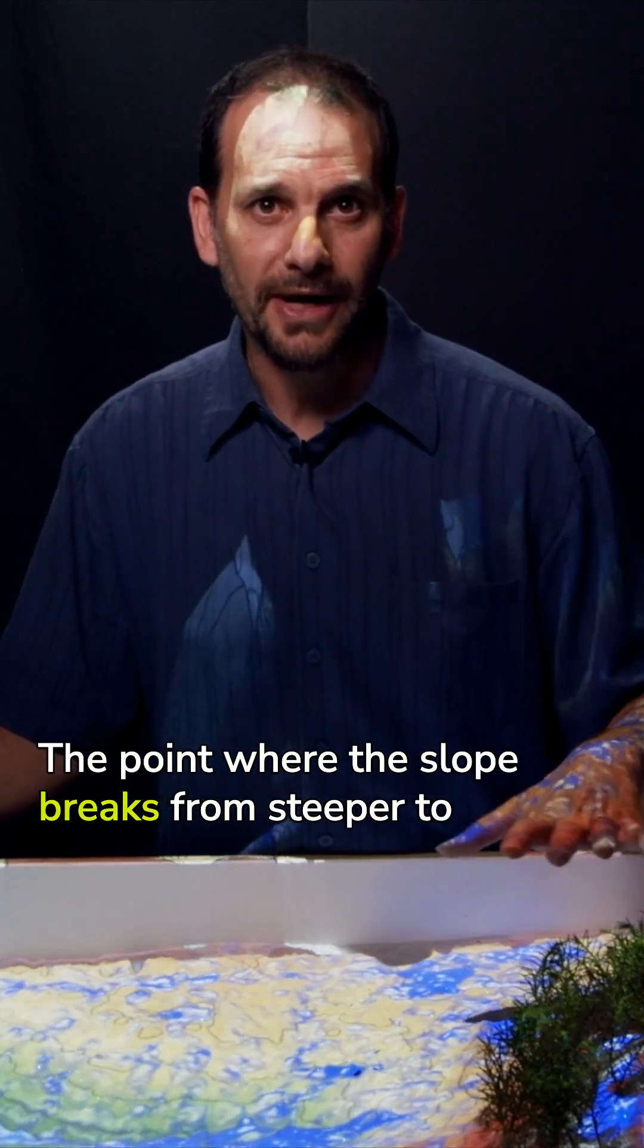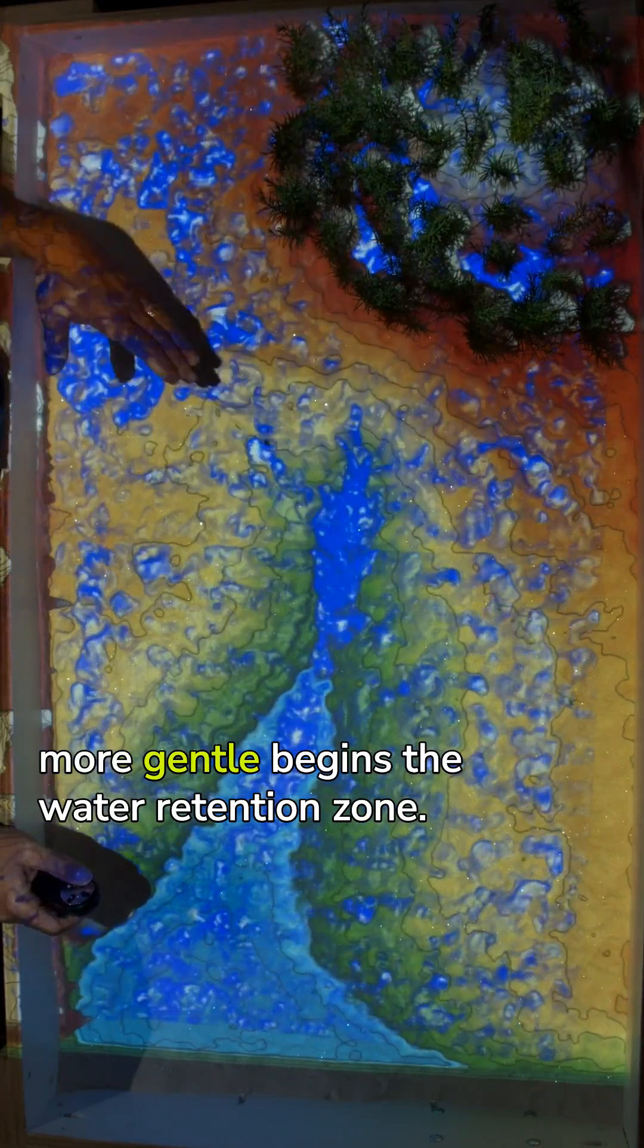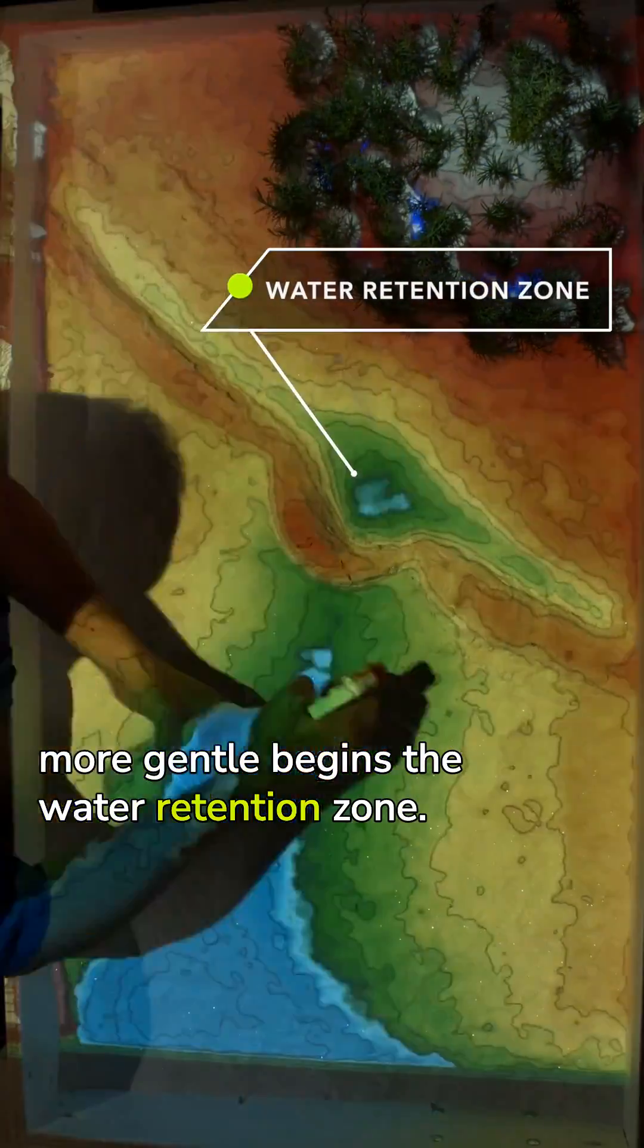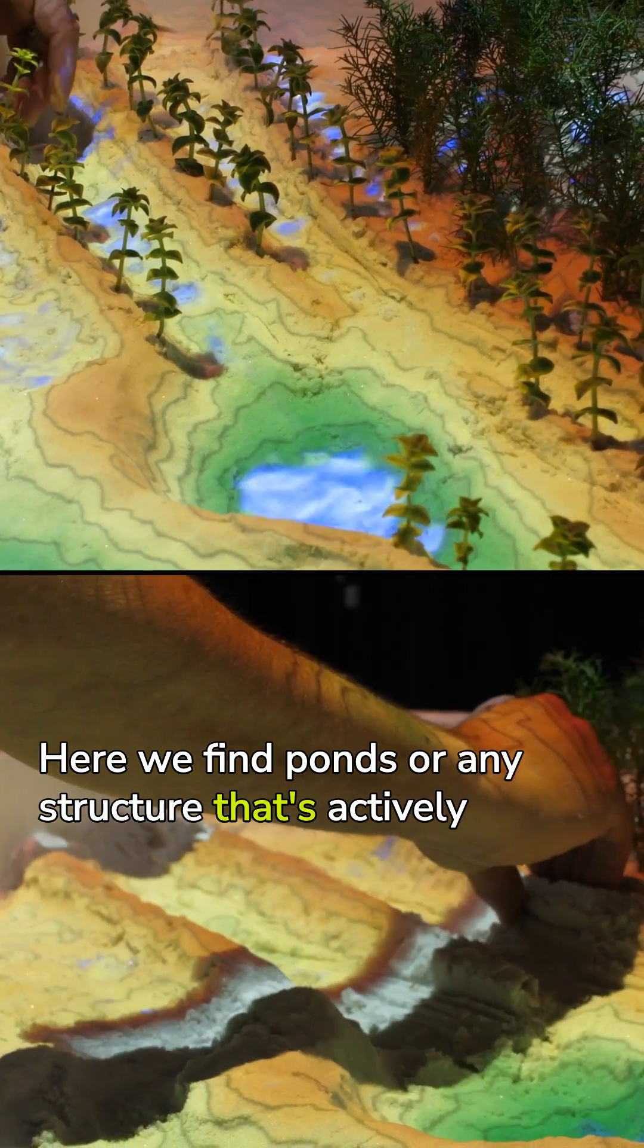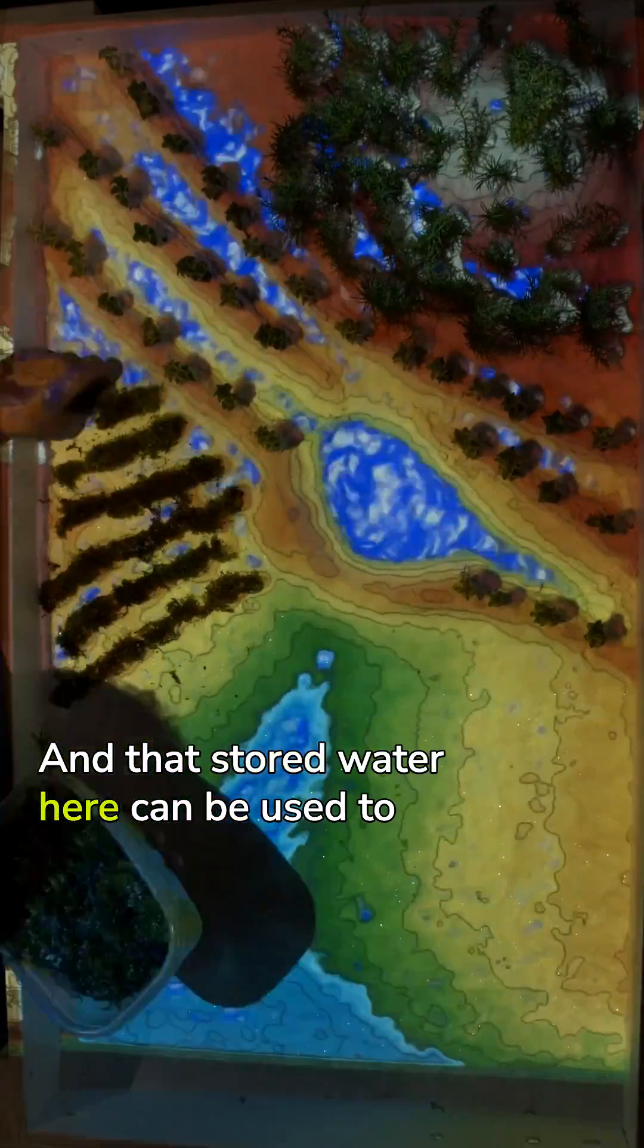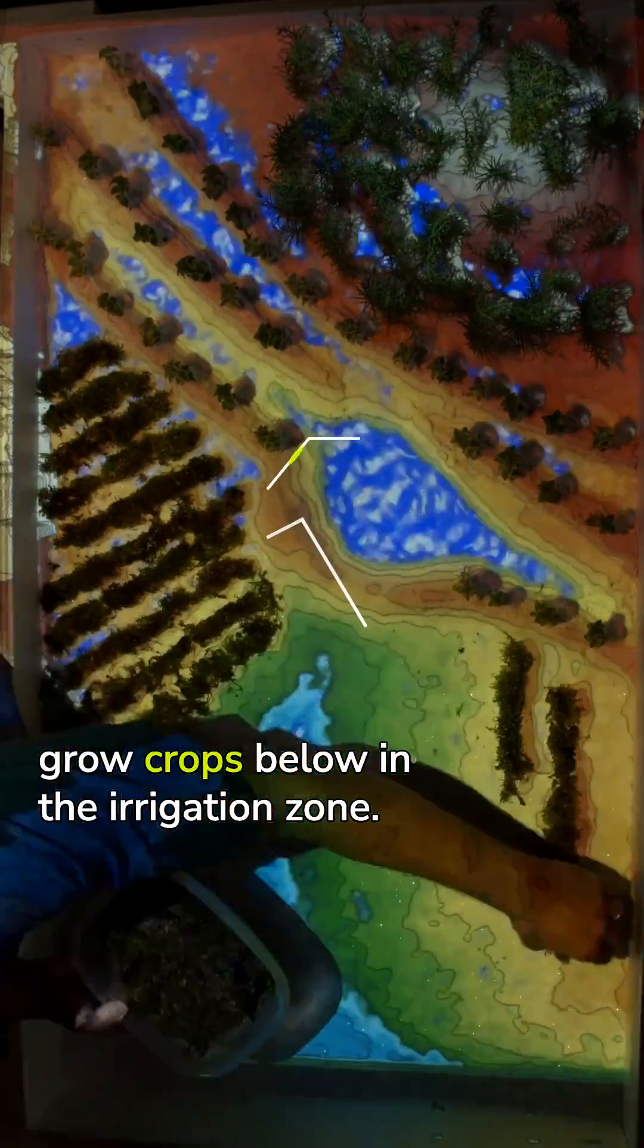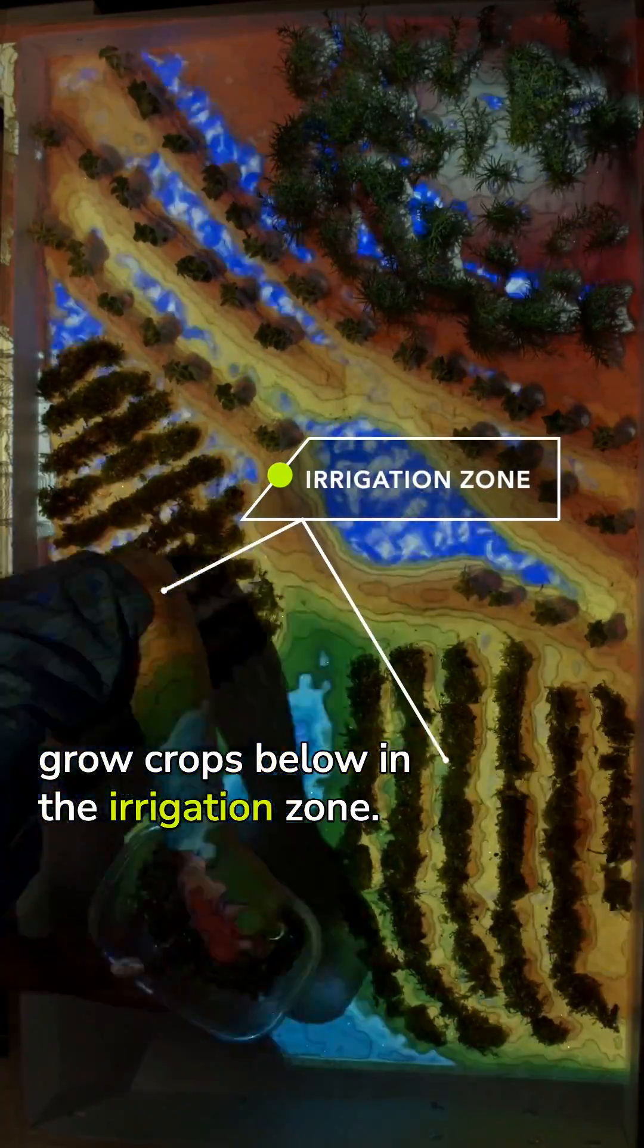The point where the slope breaks from steeper to more gentle begins the water retention zone. Here we find ponds or any structure that's actively going to retain water, and that stored water can be used to grow crops below in the irrigation zone.